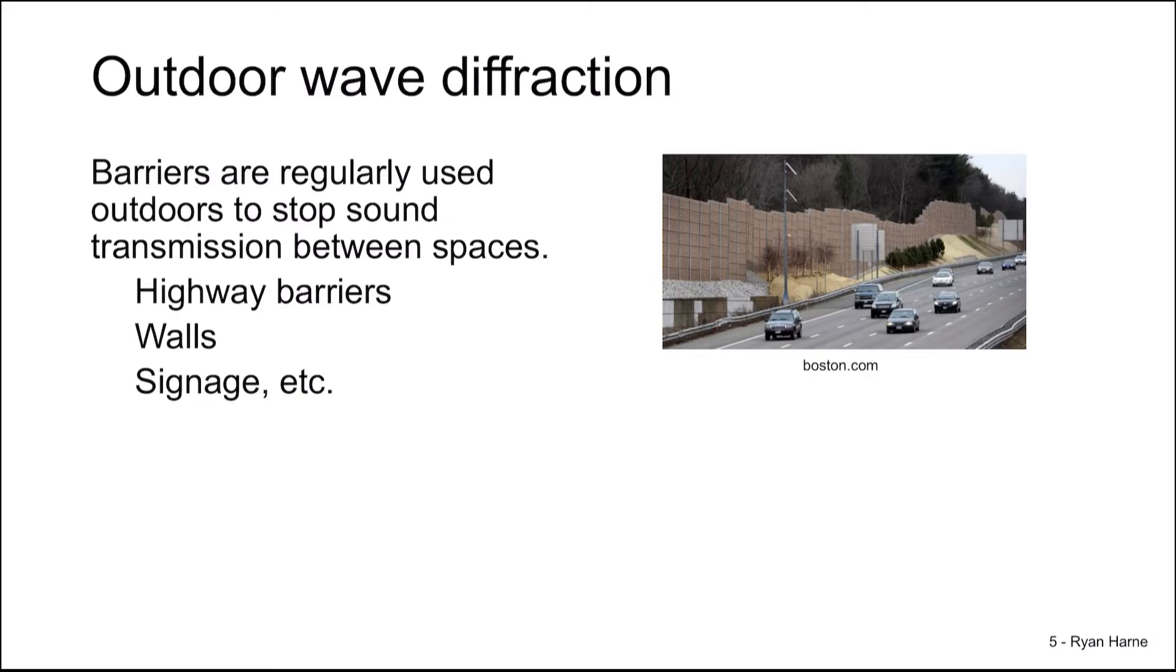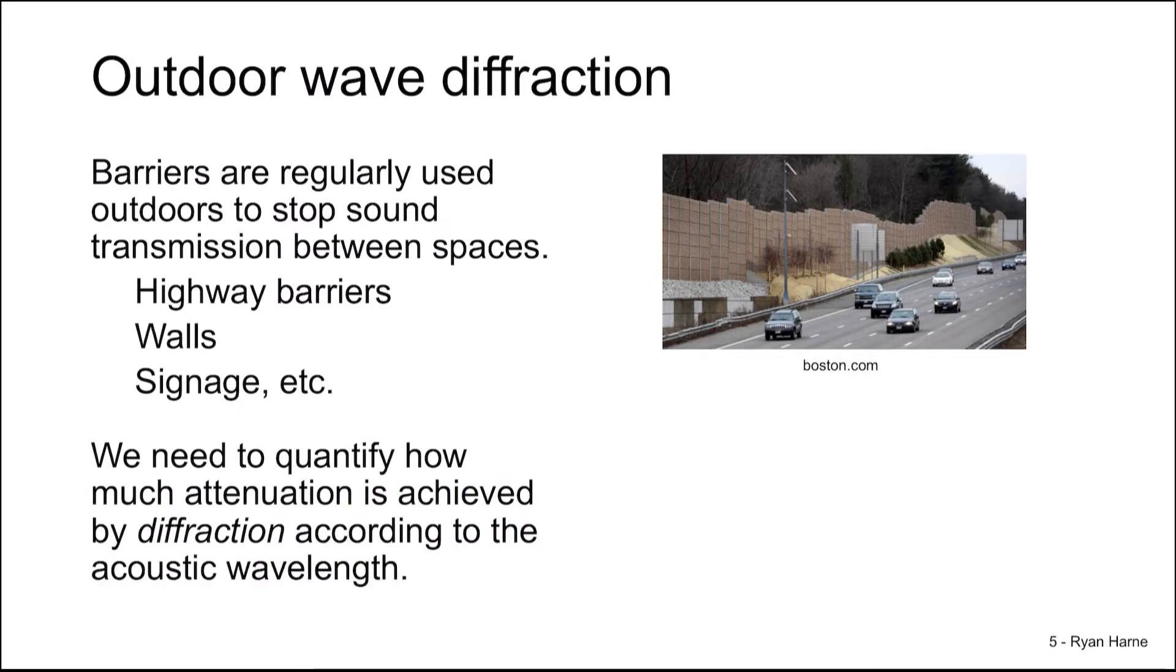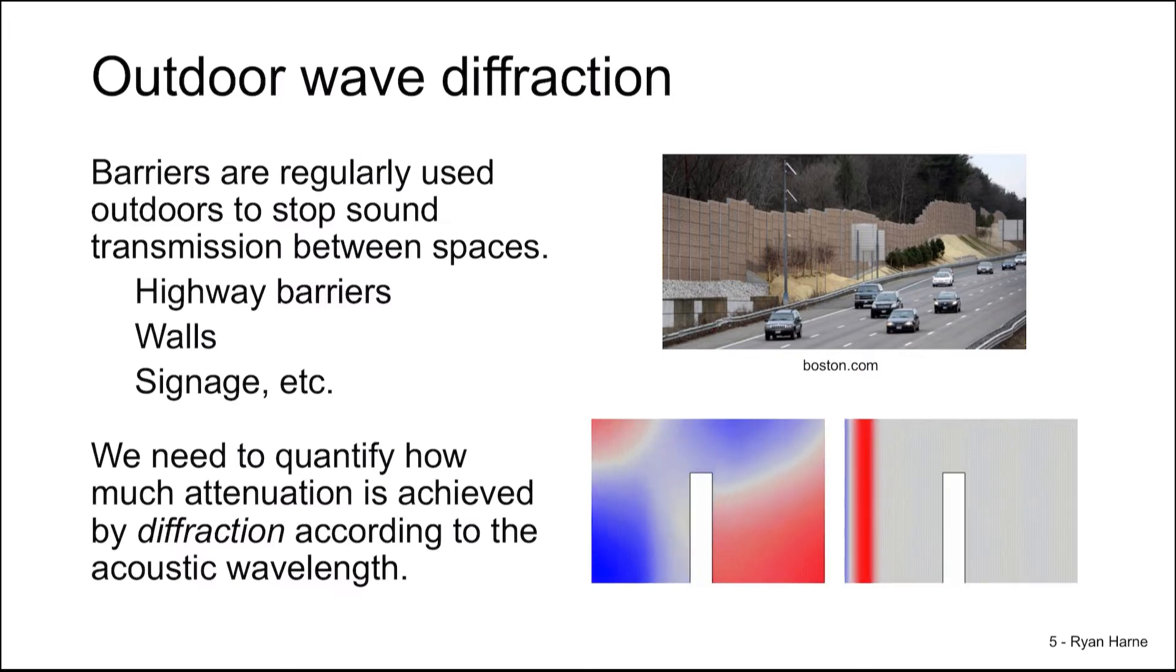Diffraction is the third and final outdoor wave propagation phenomenon that we'll focus on in this video. Sound barriers are regularly used outdoors. They're often seen as highway barriers between high traffic highways and residential areas. They also result from the use of large signage and walls. It's important then to quantify how much attenuation is achieved by the diffraction phenomena around this barrier. We recall earlier that long wavelength sound can effectively propagate right past barriers, whereas short wavelength sound is much more highly attenuated, creating these new edge sources that lead to this diffracted and bent wavelength.